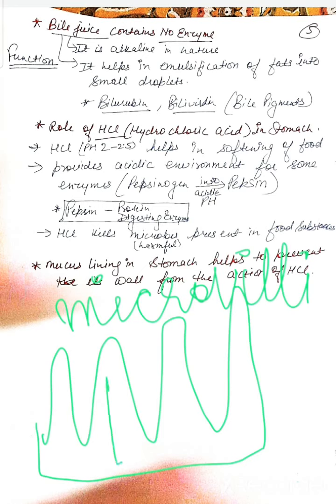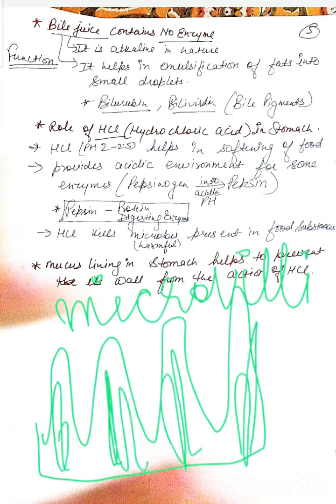The microvilli have lacteals inside, which are lymphatic capillaries that help in fat absorption. This gives a brush border appearance to the small intestine.